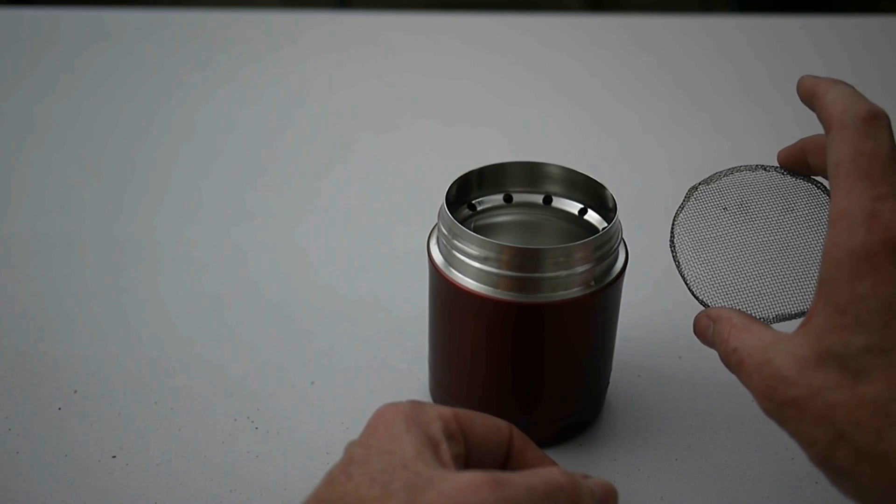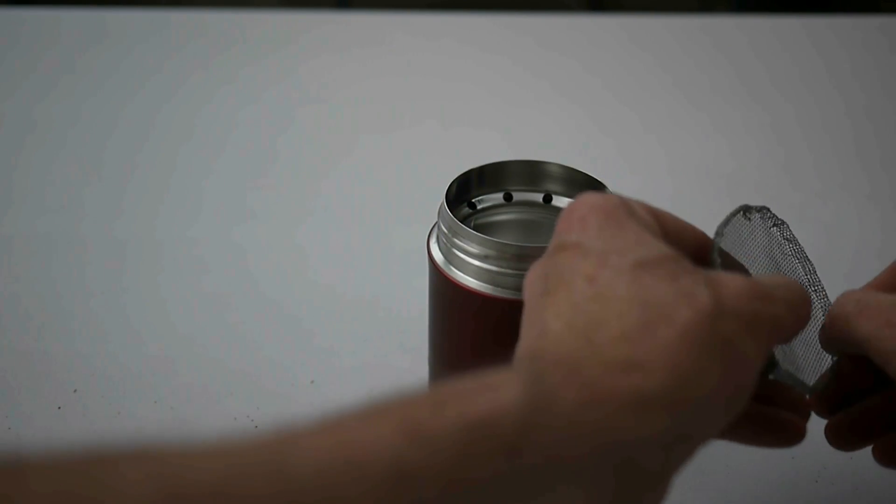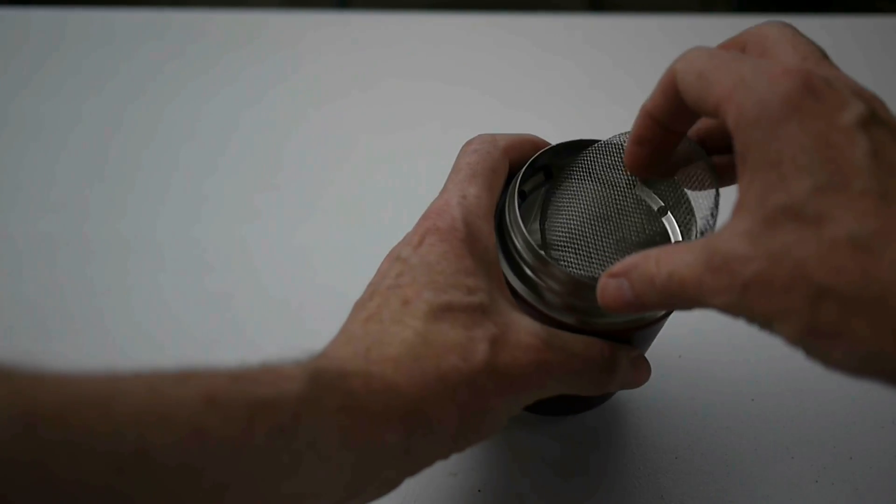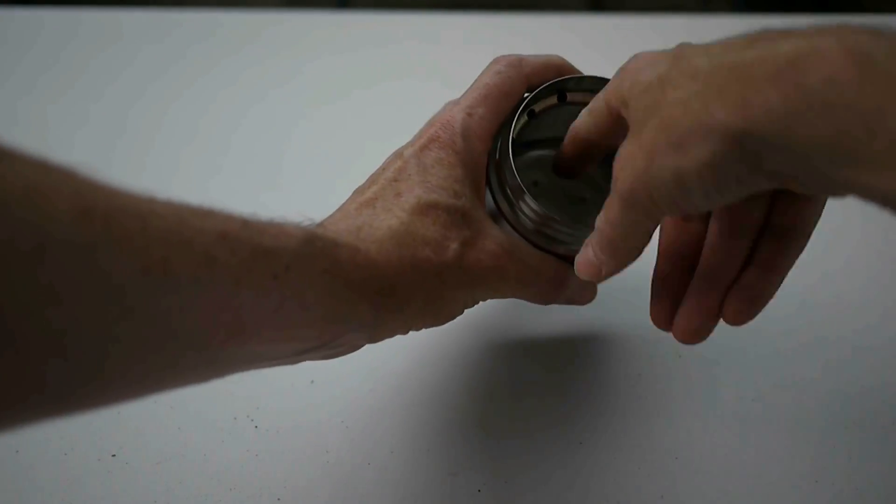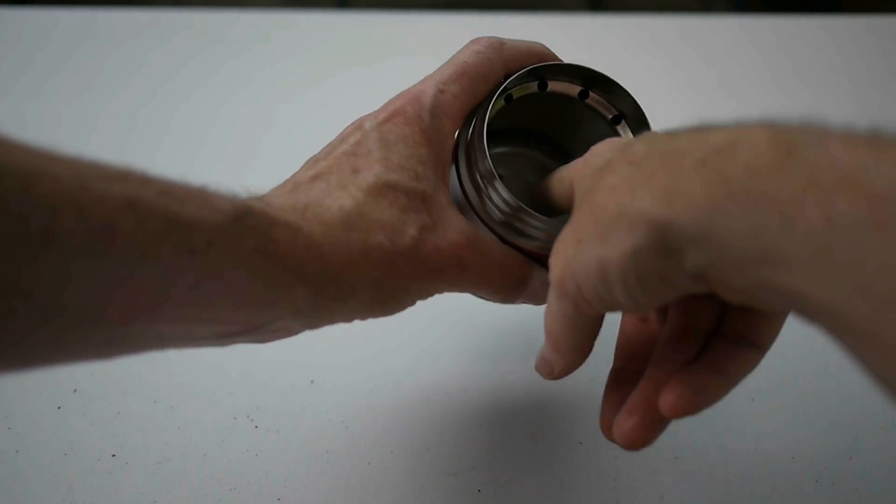This is the stainless steel strainer. I've cut the mesh out and cut it into a circle and folded it over. So now that sits inside, and you can see there that when I put the fuel in that will keep a nice gap.